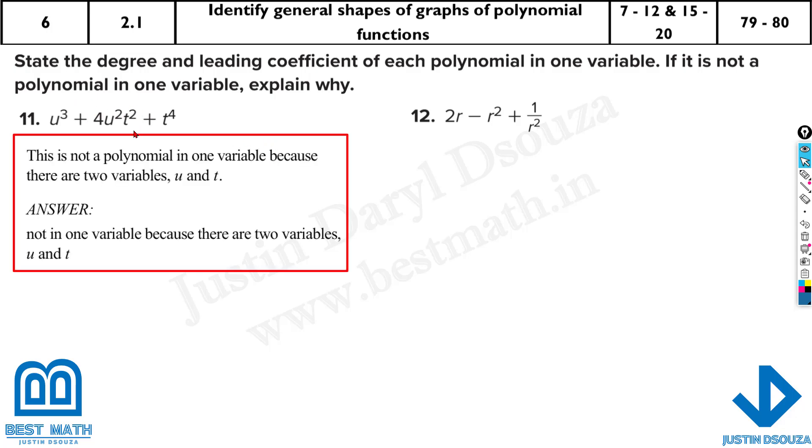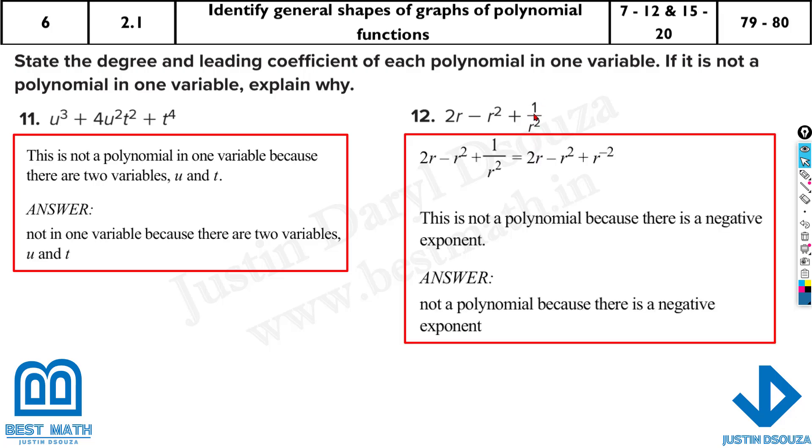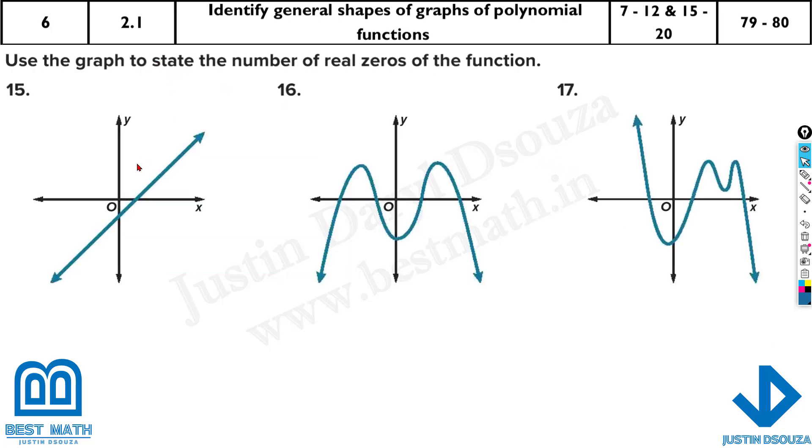So over here this is not in one variable. Though the degree, your highest degree will be four, two plus two is four, over here also four. But we don't solve in two variables. It's only in one variable that I've clearly mentioned. Here this is not a polynomial because we have divided by it, it's negative exponents. So you can't have negative exponents in a polynomial.